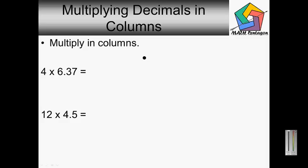Multiplying decimals in columns. So we want to multiply in columns. Let's do it. 6.37 times 4.